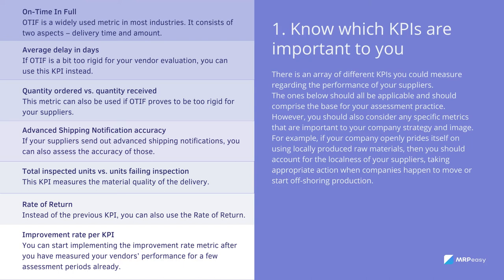On Time In Full (OTIF) is a widely used metric in most industries. It consists of two aspects: delivery time and amount. A delivery is OTIF when the order is delivered in the time frame agreed upon, in the quantity ordered, and with the goods passing quality control. If you use an MRP system, be sure to measure lead time in your business days, and decide whether you use average, median, or maximum lead time throughout your whole system. At the end of the assessment period, divide the supplier's OTIF deliveries by the total number of deliveries, then multiply by 100 to get the percentage of OTIF.